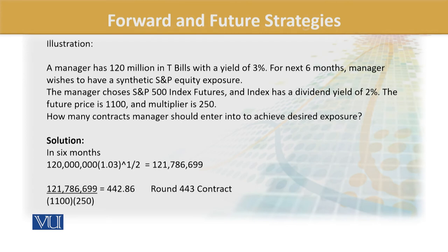That is our exact calculated answer: 442.86. Since we cannot buy fractional futures contracts, we round up to 443 contracts. Entering 443 contracts gives us exposure as if the entire portfolio has been invested in the index. When the index generates returns, we gain from it — even though the money stays in T-bills. So we've learned two things: we synthetically moved to the index, and we know exactly how many contracts were needed to achieve those desired results. This is how we create a synthetic index.